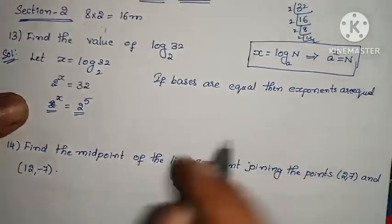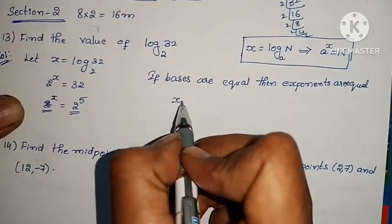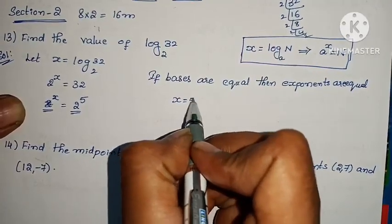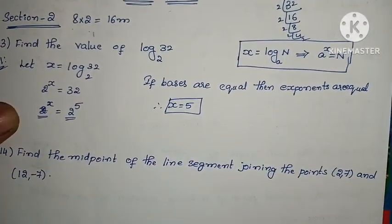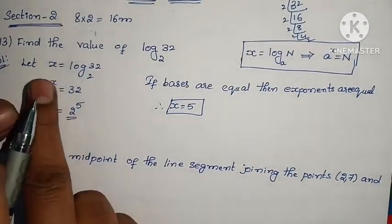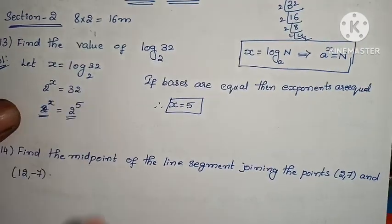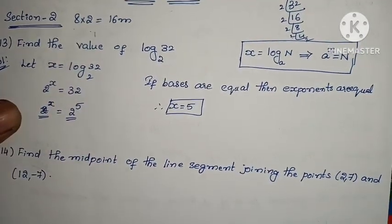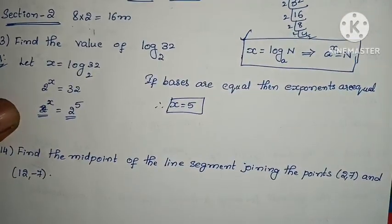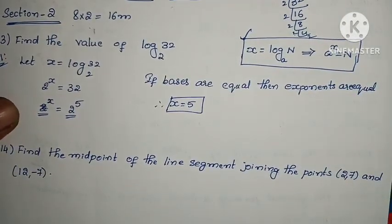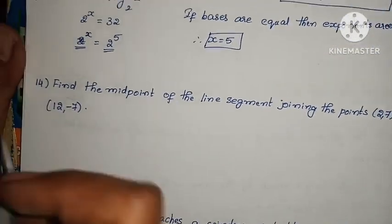Since both sides have base 2, x equals to 5. The problem is complete. It's quite easy. If the model is x equals to log n base a, use a power x equals to n. This is a very important formula — remember it well.